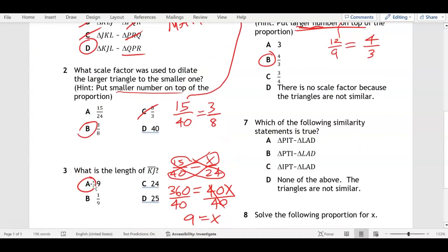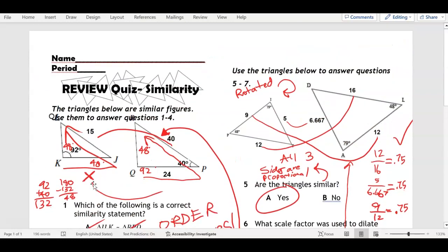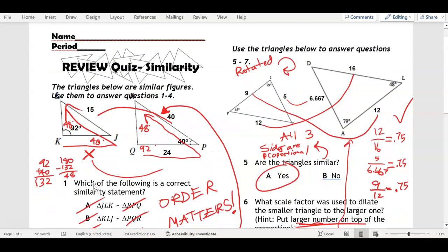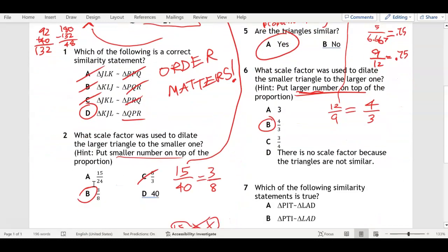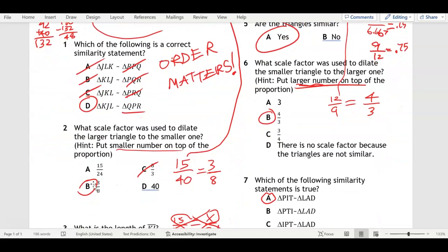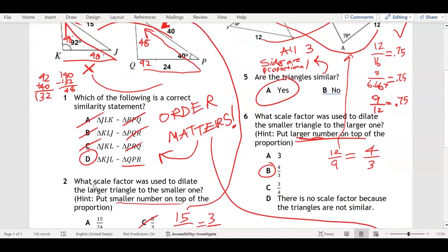Number seven: which one of these is true? Is PIT similar to LAD? So P is 48, L is 48. I is 79, A is 79. T is missing, D is missing. We could figure those out, but PIT and LAD actually is similar. Order matters here and order matters here. Let's look at PTI LAD.